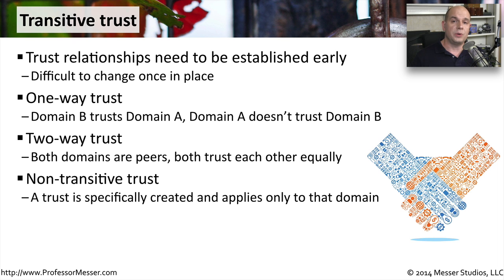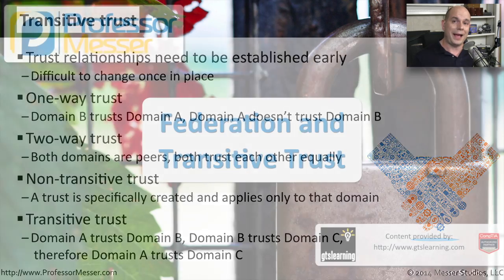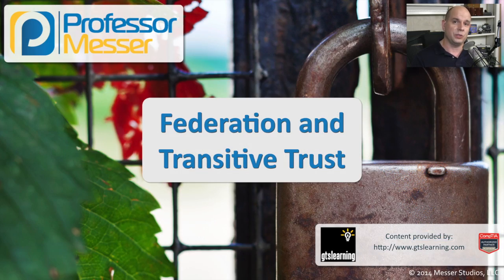Some of these trusts are non-transitive — we may create a trust from domain A to domain B, but we would not allow domain B to extend that trust to other domains. Or the trust may be transitive, where domain A trusts domain B, domain B trusts domain C, and therefore domain A would then trust domain C. These trust relationships are extremely important, they need to be well planned out, and they can be a very powerful tool to allow access to the resources in your environment.